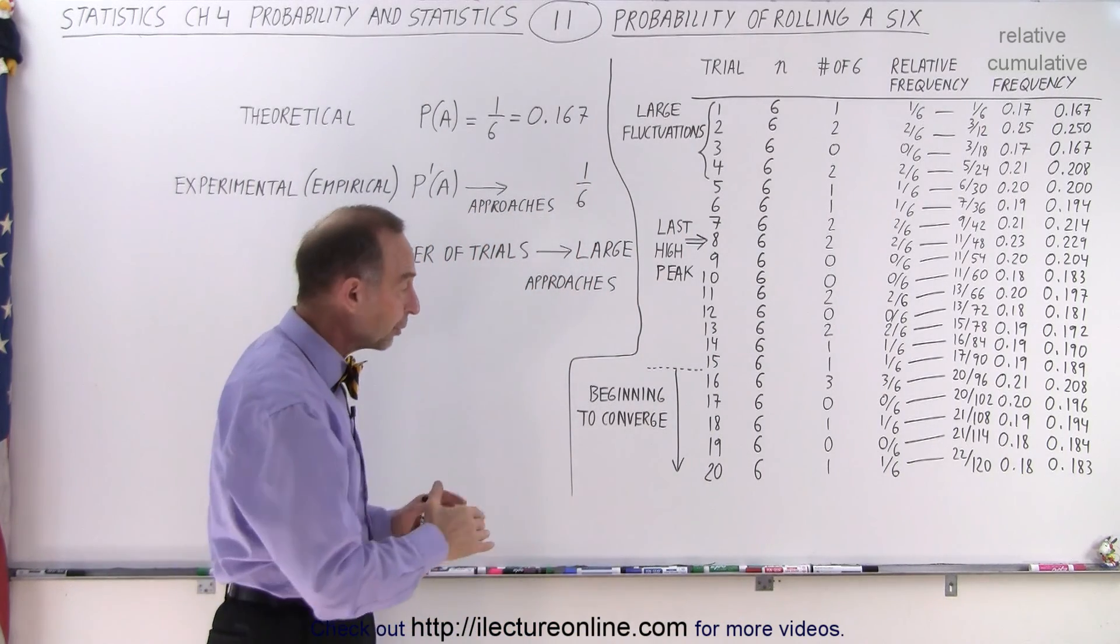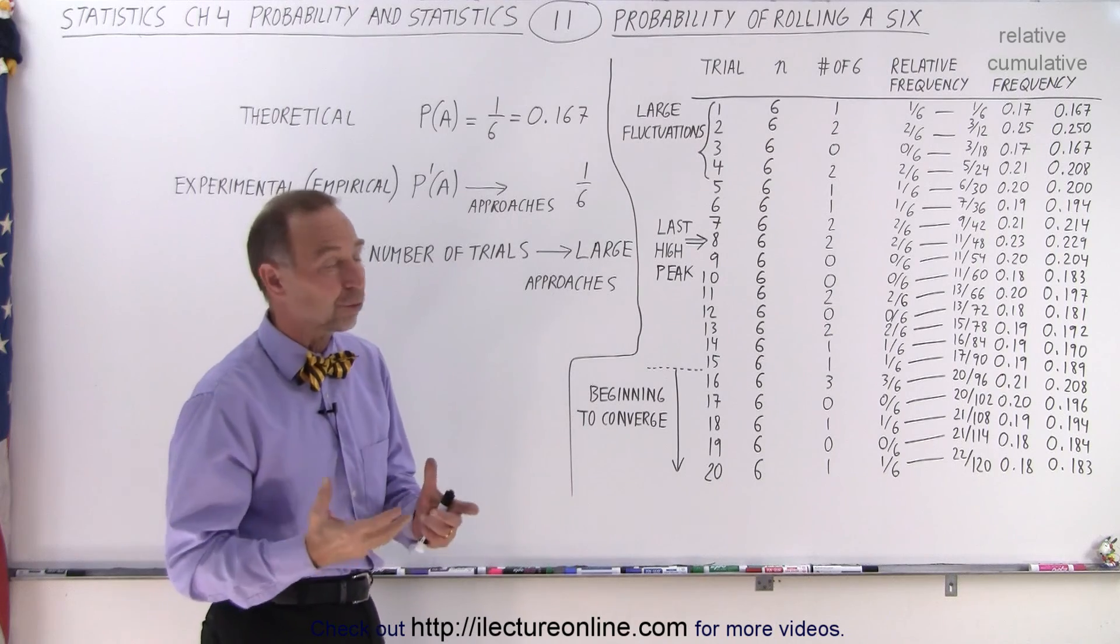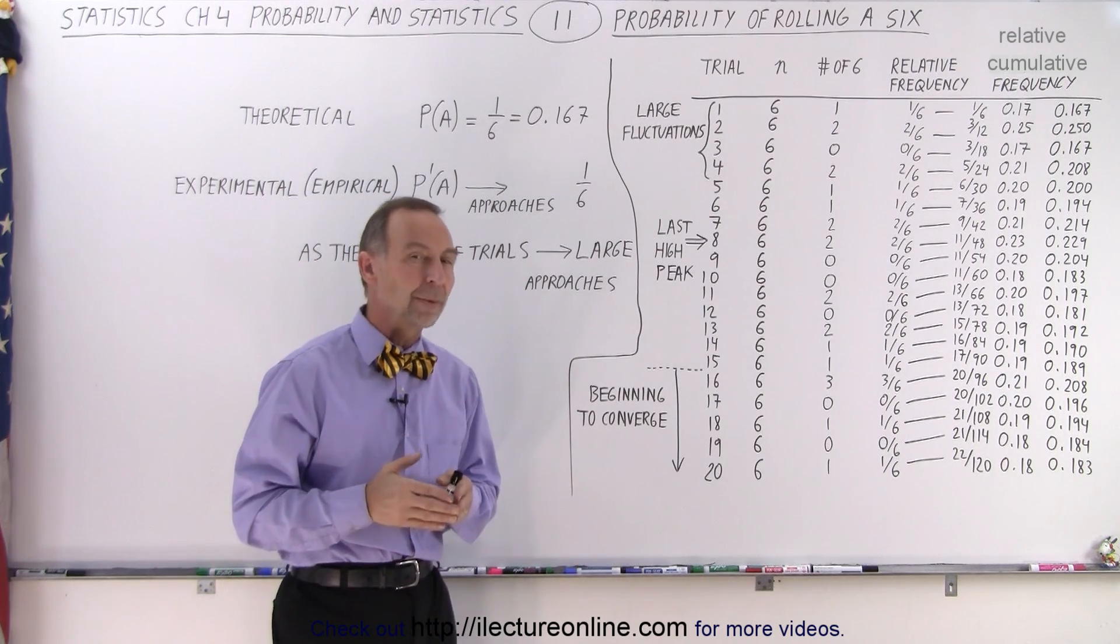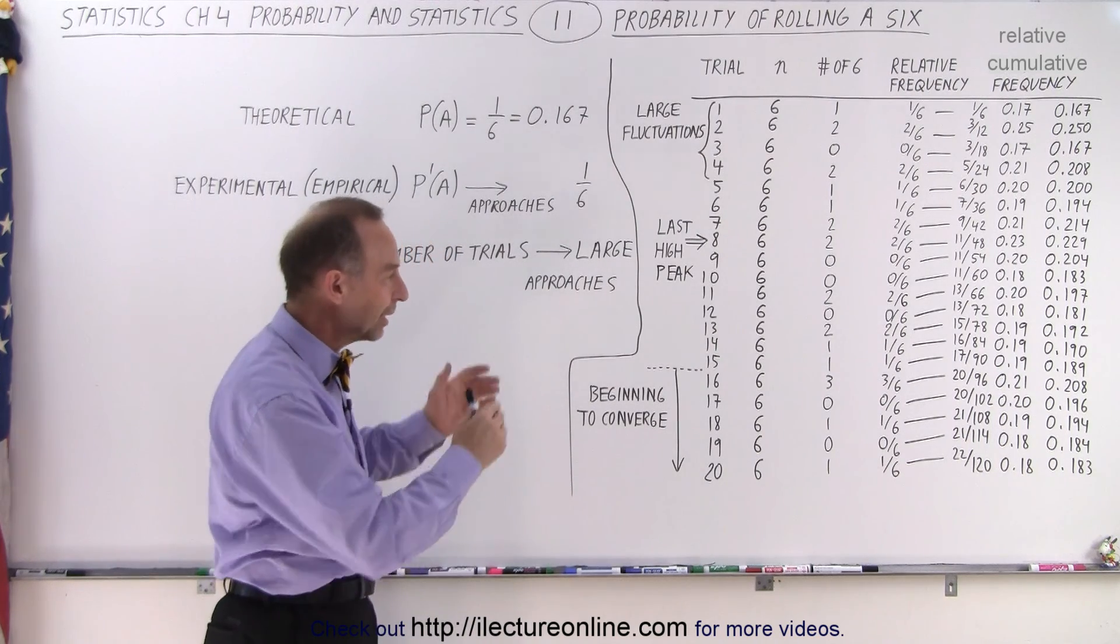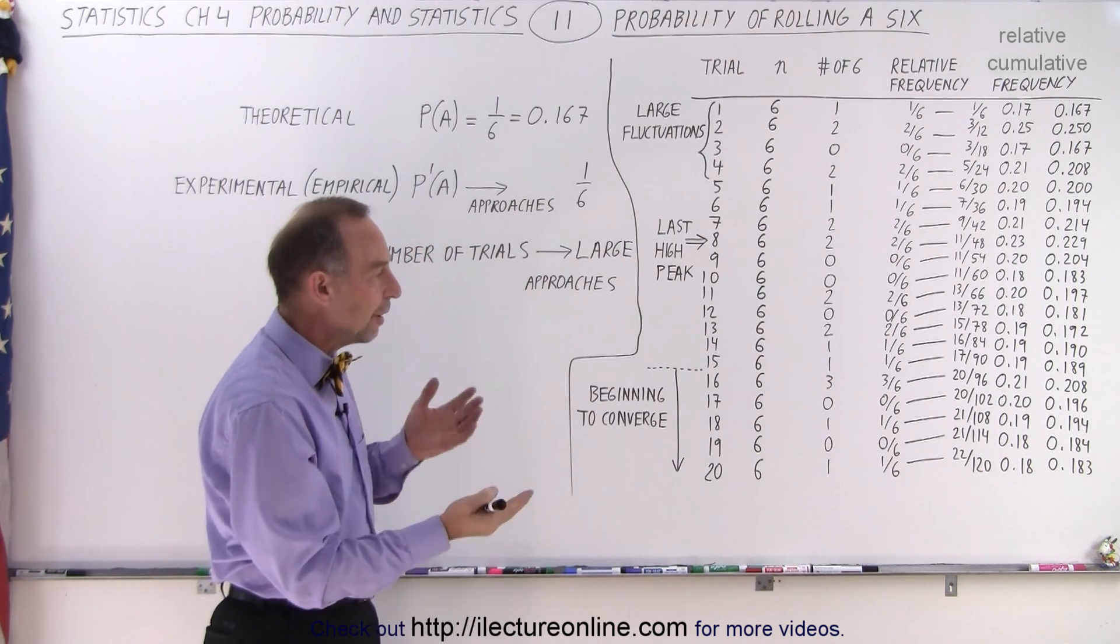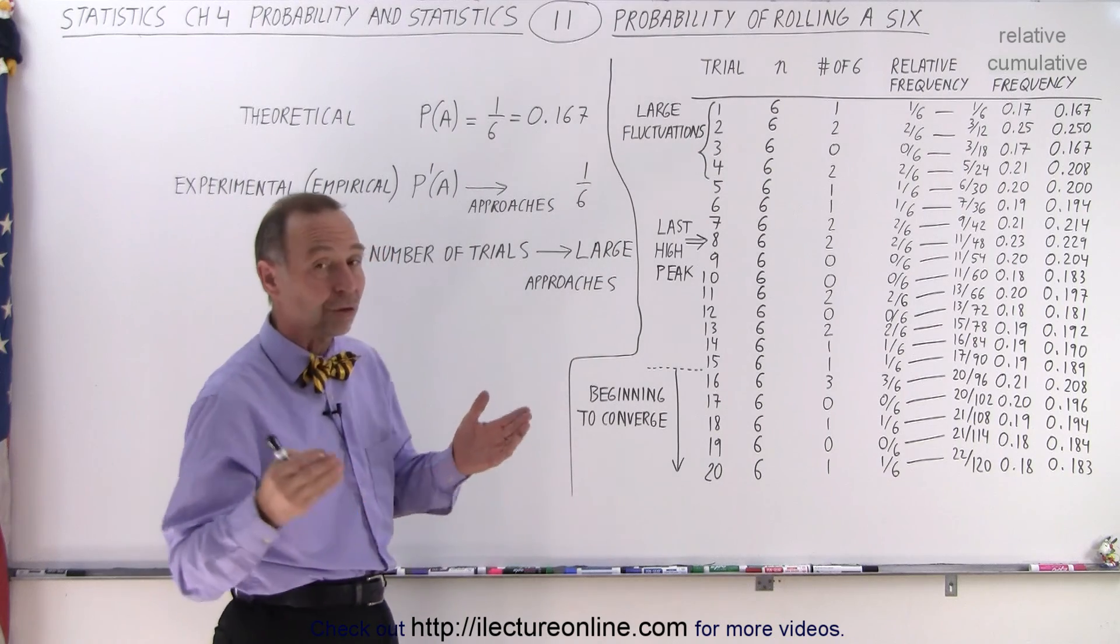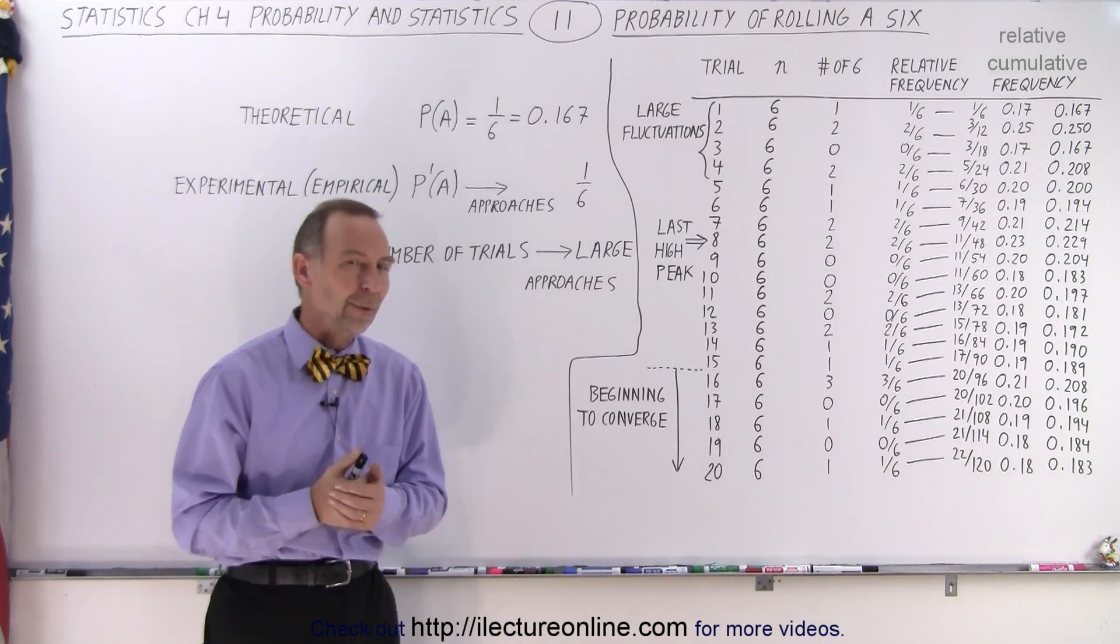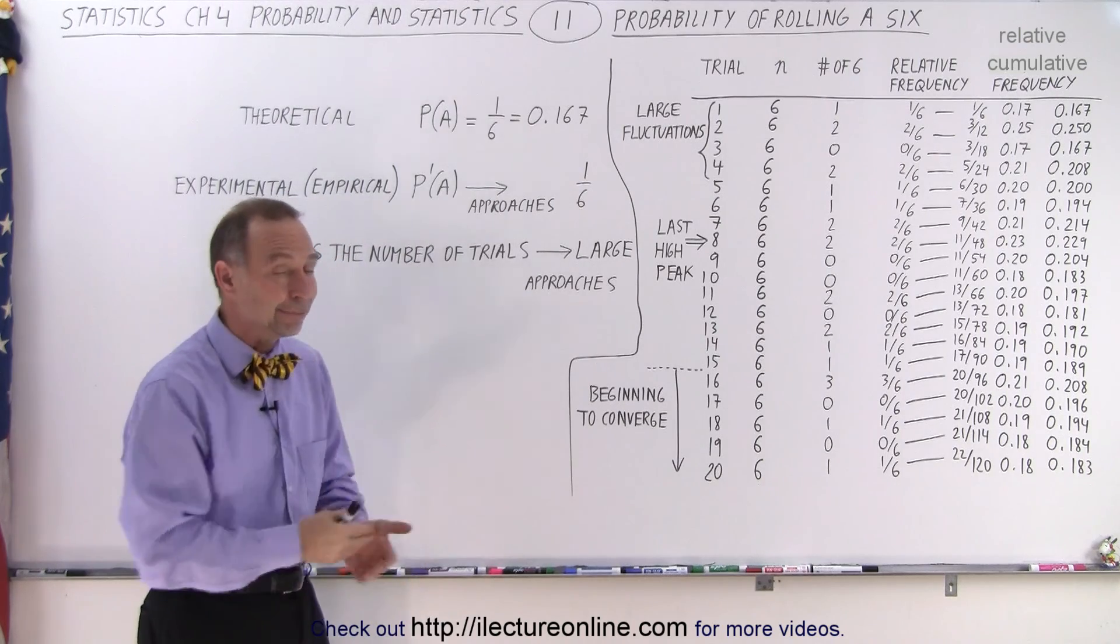Now, we don't know at this point how many times or how many trials we should have to get much closer to that theoretical probability, but we'll attack that problem later. Here, we just want to get a feel for how we can see that after a great number of trials, we will get closer and closer to that theoretical probability. And that is how it's done.